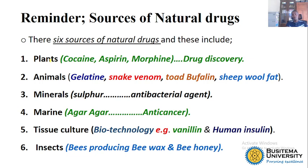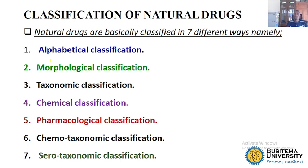So today we shall talk about how we classify these natural drugs, because the last lecture was about sources of natural drugs. When we are talking about classification of natural drugs, there are basically seven ways in which we classify these natural drugs.